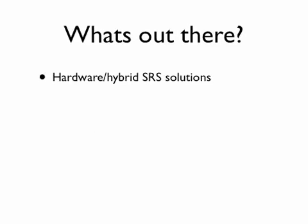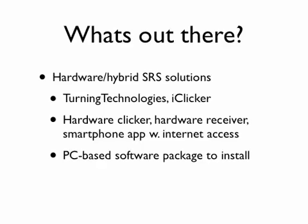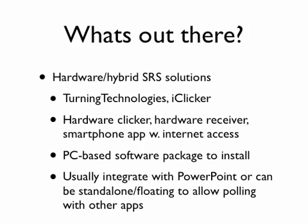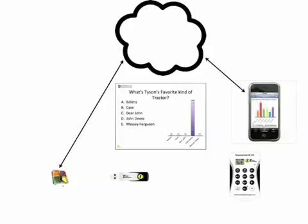So let's look at what's out there. We've got two basic kinds of SRS systems. Hardware SRS solutions — things like Turning Technologies or iClicker — consist of a hardware clicker, a hardware receiver, or a smartphone app with internet access, and usually a PC or Mac-based software package. They usually integrate with PowerPoint or can be standalone for polling with other apps. Here's a brief graphic of how it works: the software displays the slide, students use their clicker to respond to the receiver, which sends responses back to the software. The hybrid portion connects the software to the internet so smartphones can receive and respond to questions, and you can also use browsers or any internet-connected device.